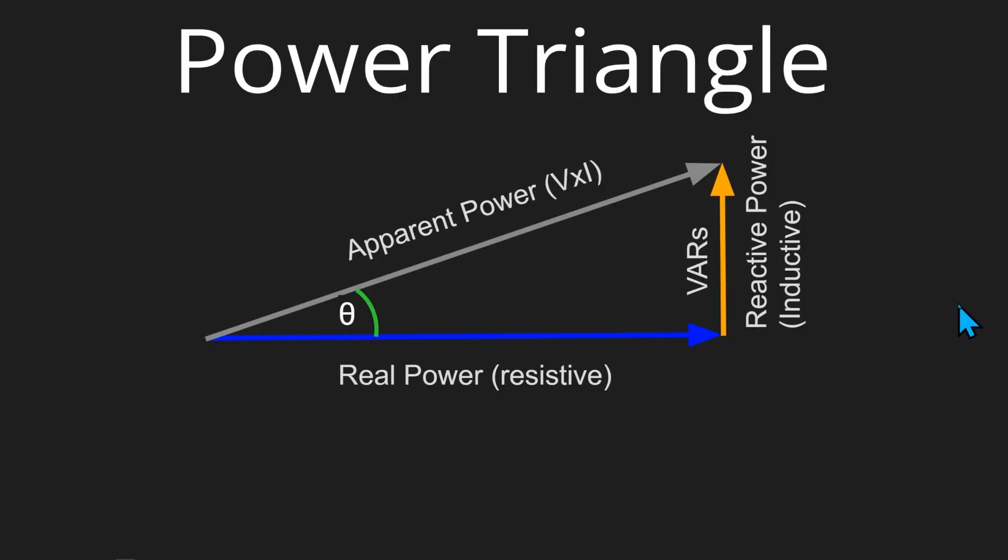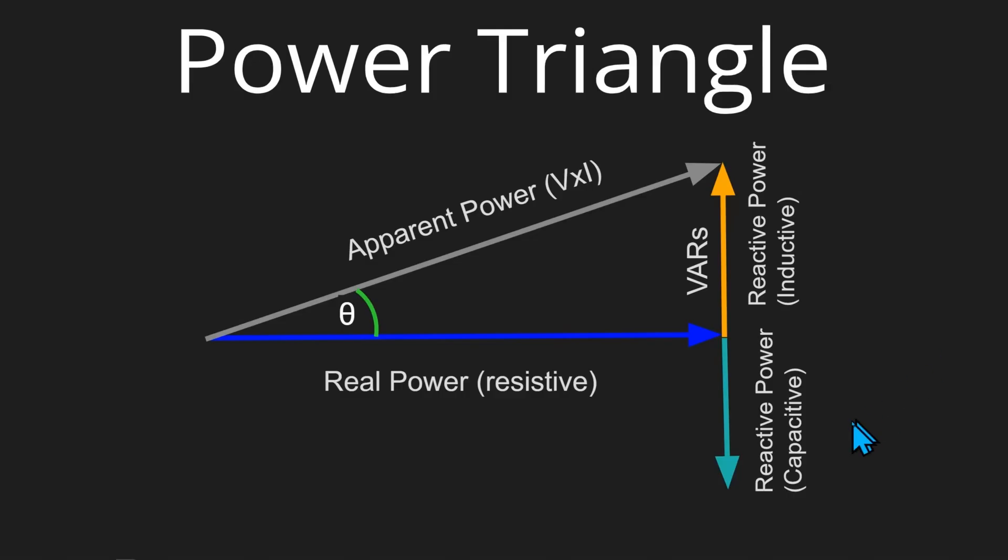To straighten out that triangle, we'll add a capacitor in parallel with the load. The capacitor supplies leading reactive power, which cancels out the lagging reactive power of the inductor, as shown here.